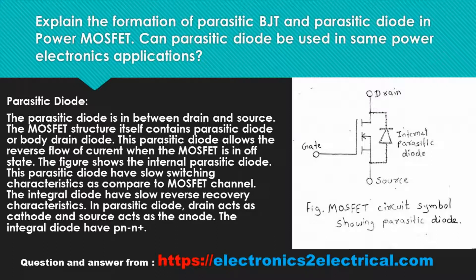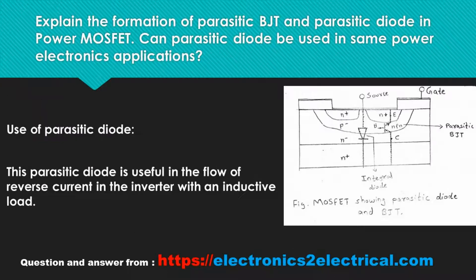The integral diode has a PNN+ structure. This parasitic diode is useful for the flow of reverse current in the inverter with an inductive load.